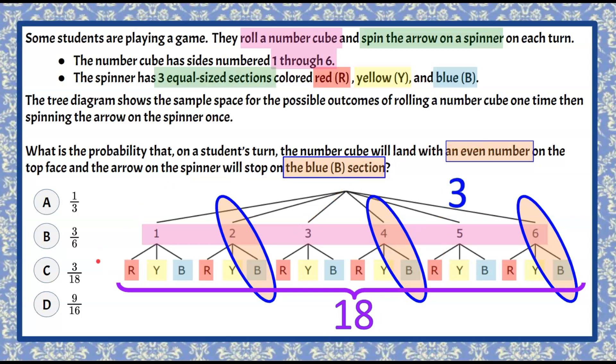So we look at our answer choices and we see that C is 3 out of 18 and we know that we have a 3 in 18 chance of rolling an even number and spinning and landing on a blue section of the spinner.